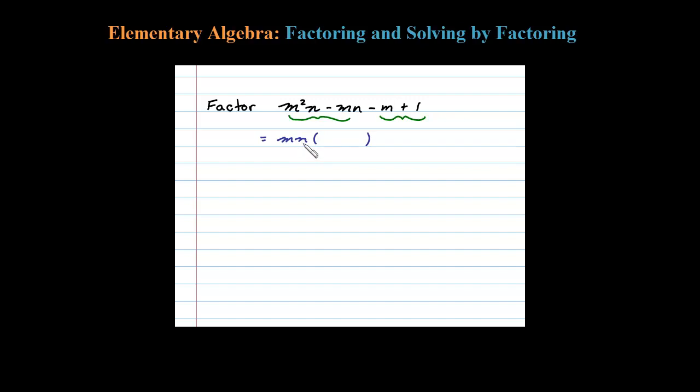If you factor out an M and N, what's left is M minus 1. You should always double check: MN times M is M squared N, MN times negative 1 is minus MN. Okay.